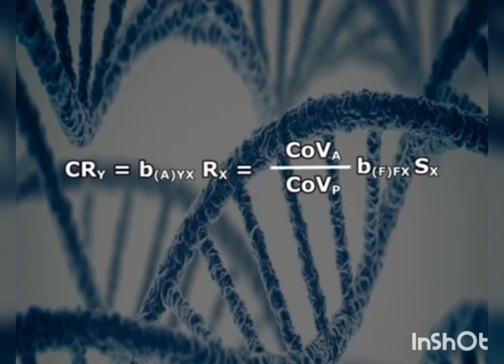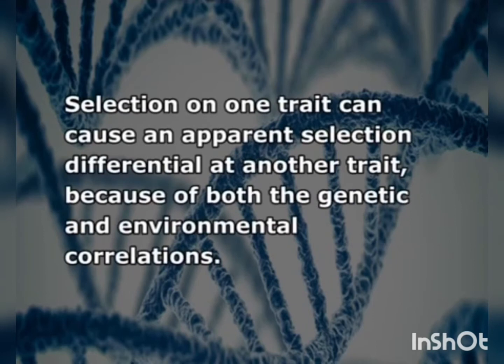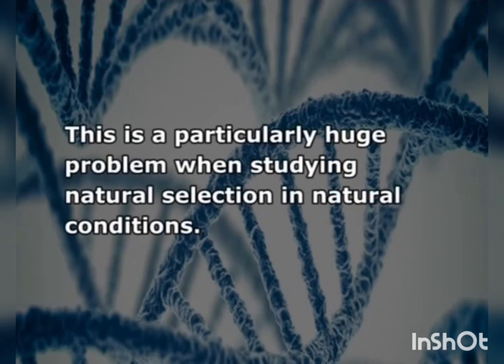The correlated response to selection is given by the formula: CRY = h_A · h_YX · r_A = (Cov_A / Cov_P) · B · h_YX · S_X. The selection of one trait can cause an apparent selection differential in another trait because of both the genetic and environmental correlations. This is particularly a large problem when studying natural selection under natural conditions.